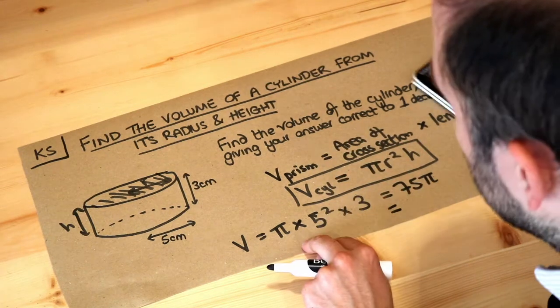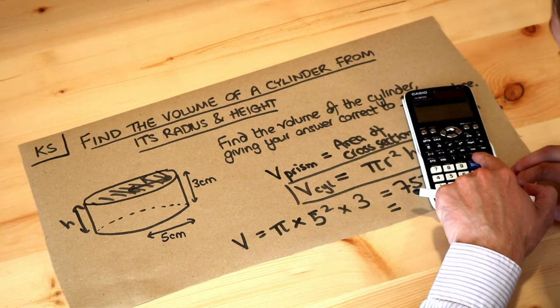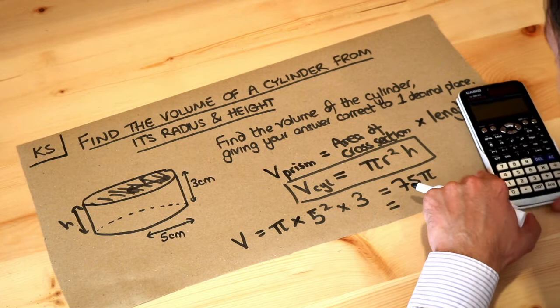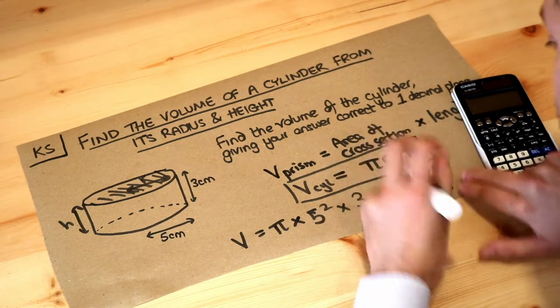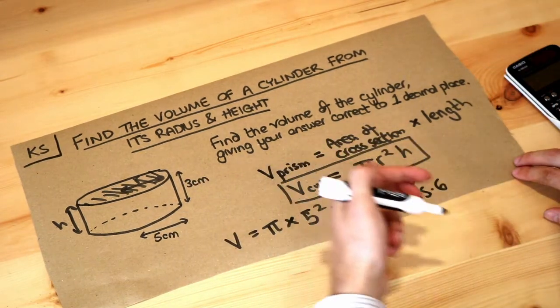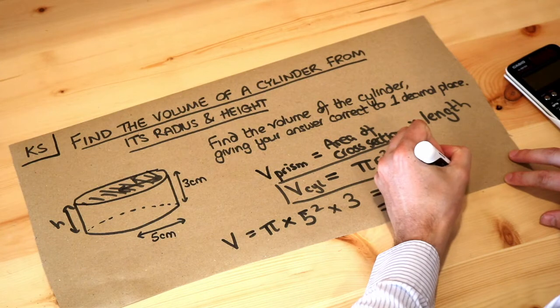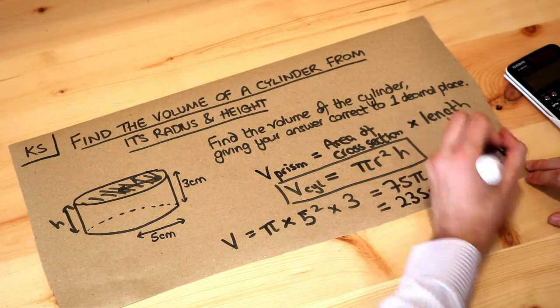But if you want to get that as a decimal, because it wants an answer to one decimal place, we just press the SD key here, if you've got a Casio calculator. And that gives you 235.6, and what is the unit? Well, these are all in centimeters, so a unit of volume will be centimeters cubed, and that's to one decimal place. And that's the final answer.